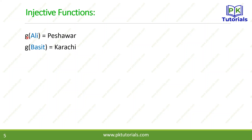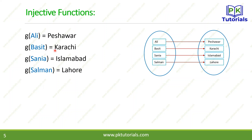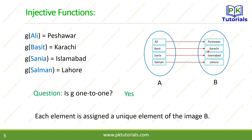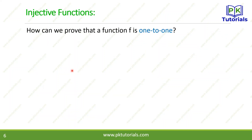اب اس example کو تھوڑا change کرتے ہیں۔ ایک اور function g لیتے ہیں: g(Ali)=Peshawar، g(Basid)=Karachi، g(Sania)=Islamabad، g(Salman)=Lahore۔ اب ہر ایک element exactly ایک unique element کو map کر رہا ہے۔ Is g one-to-one? Yes — each element is assigned a unique element of image B، تو یہ ایک injective function ہے۔